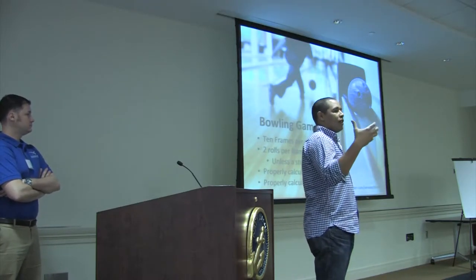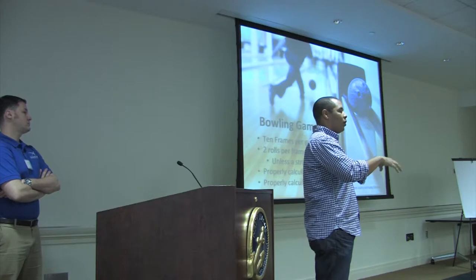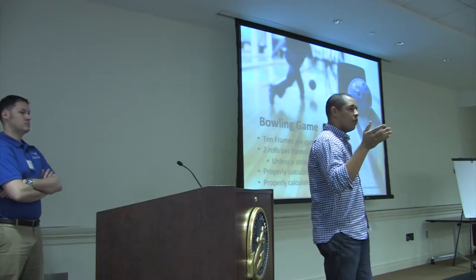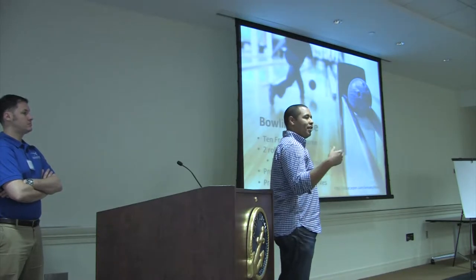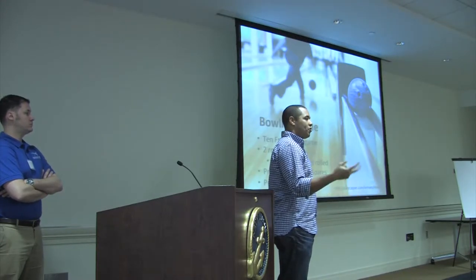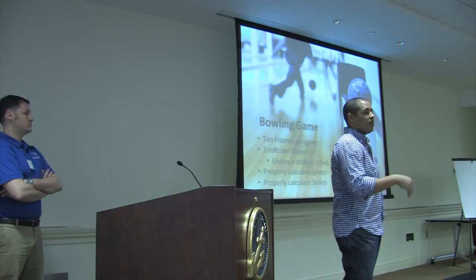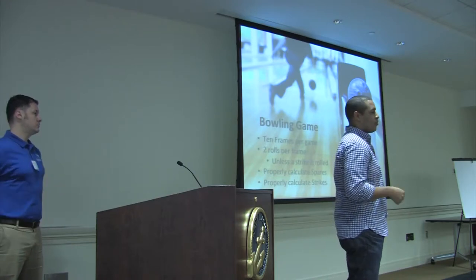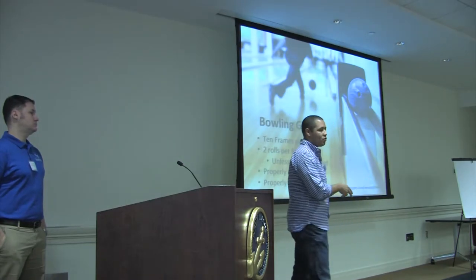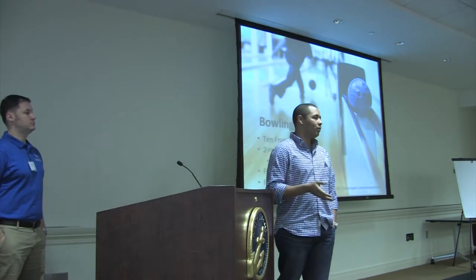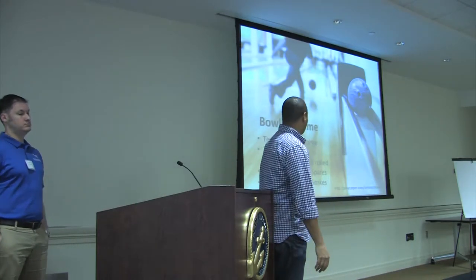We're going to solve a problem called the bowling game kata. In this kata you write code to score a game of bowling. There are ten frames per game and two rolls per frame — unless there's a strike, which means you knocked down all the pins in one roll. There's a special way to calculate spares and strikes. It starts off as a simple problem and gets more complicated as you add requirements — a good problem to demonstrate through code.